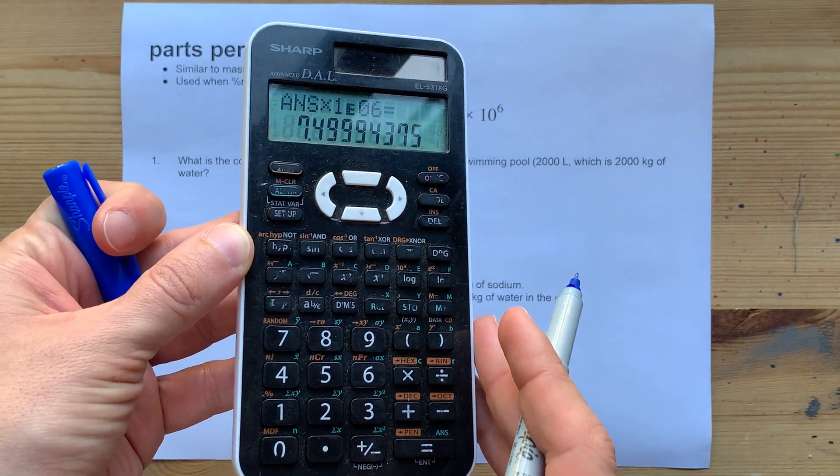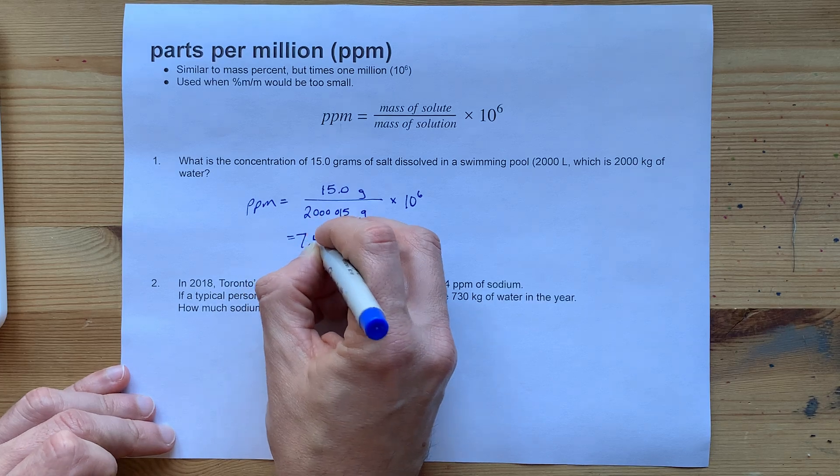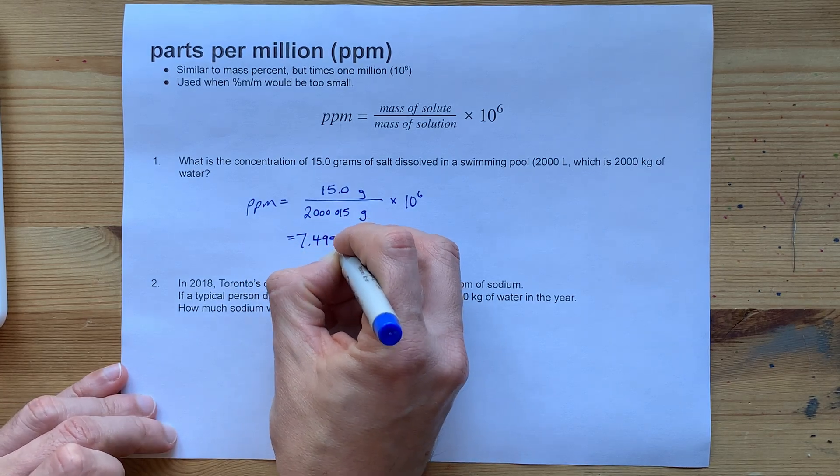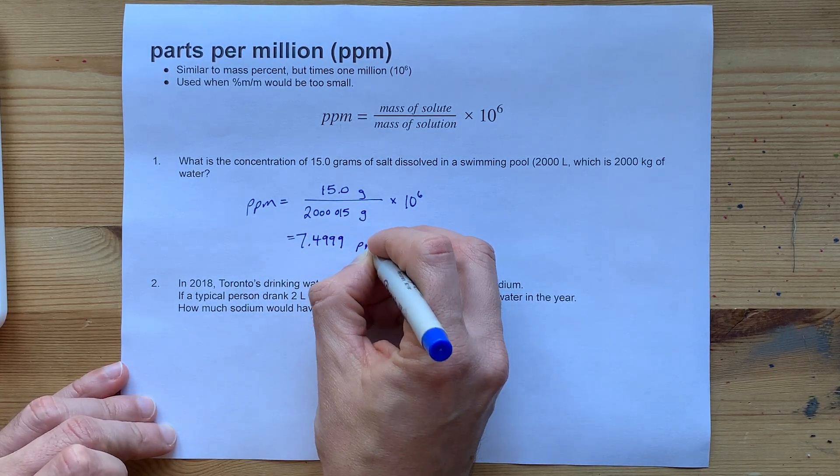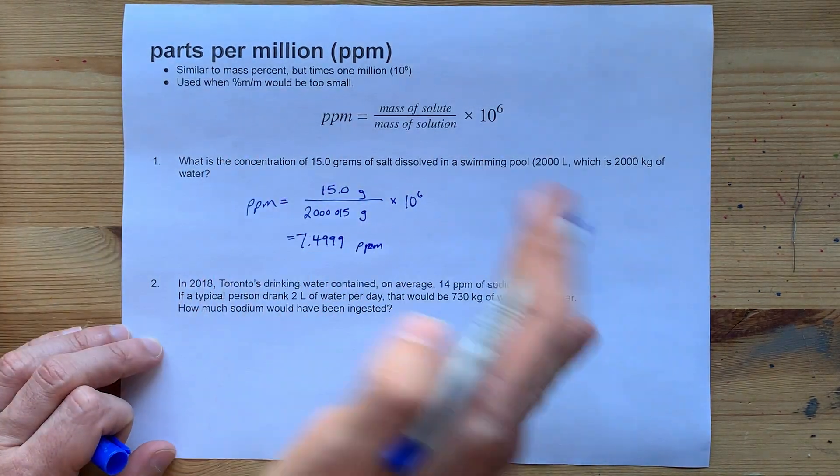All right, so I end up with 7.4999. I'm going to write that whole thing down, 7.4999 ppm. But just keep in mind, for significant figures,